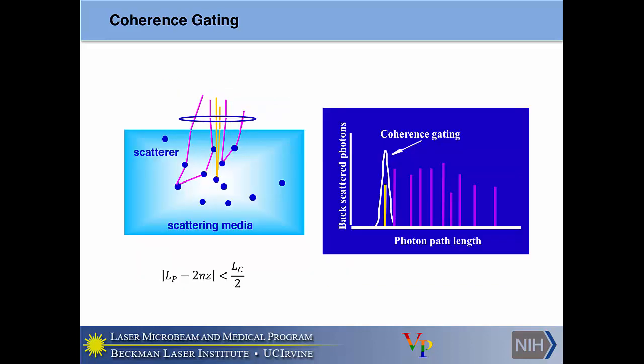How do we get rid of these undesirable multi-scattered events? As mentioned earlier, we have coherence gating — we can only perform interference between backscattered photons and our reference mirror within certain path length differences between the sample and reference arms. By having a very narrow coherence length, you can essentially bandpass filter out these longer multiple-scattered events, achieving a much finer axial resolution than you would otherwise.